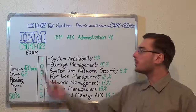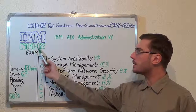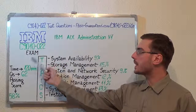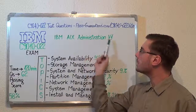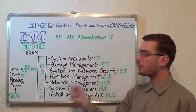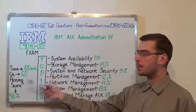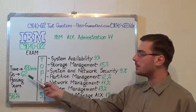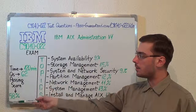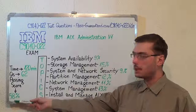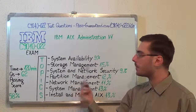Hello everyone, today I will present you the IBM C9010-022 exam, IBM AIX Administration v1. Here you have some basic test information. The duration of this exam is 2 hours, there are 62 questions and the minimum passing score is 58%. Now let's cover the exam topics.